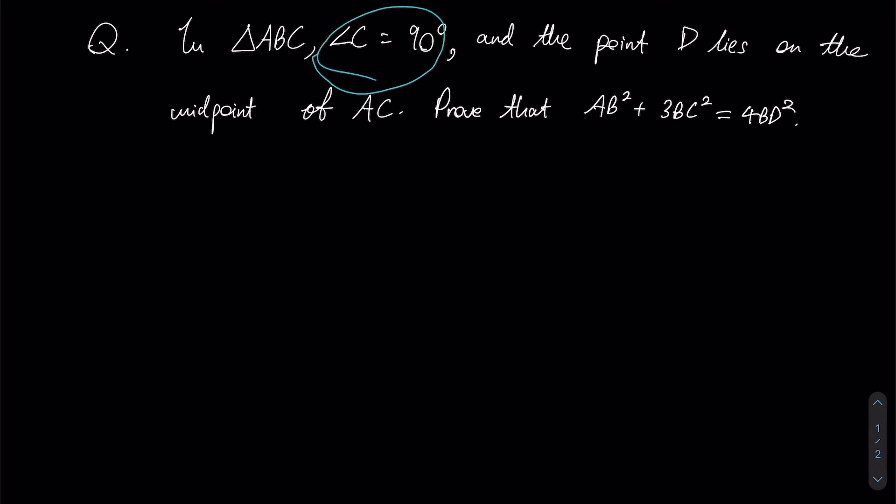Given that the question specifies there is a right angle at angle C, let's take a look. We have a triangle ABC where C is the right angle, and the point D lies on the midpoint of AC. We're supposed to prove that AB² + 3BC² = 4BD².